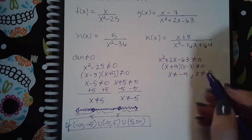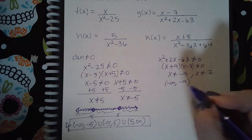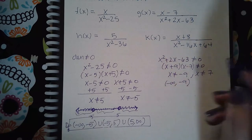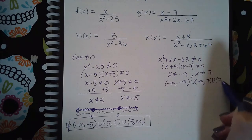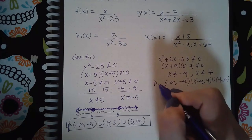So I'm going to have negative infinity to negative nine, because negative nine is to the left of negative seven on a number line. And negative nine to seven, and then from seven to infinity. And that's the domain of g.